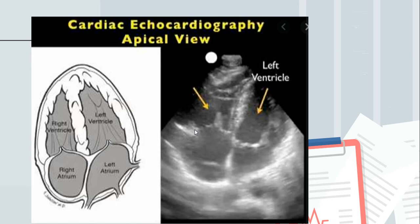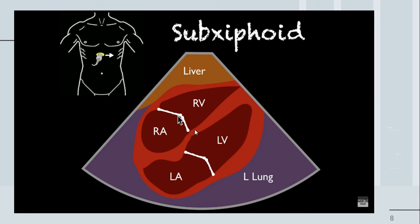Next we have the subxiphoid view. Again the probe has changed positions, and here you can see the right atrium, right ventricle, left atrium, and left ventricle. This is a real-life ultrasound image of the subxiphoid view.